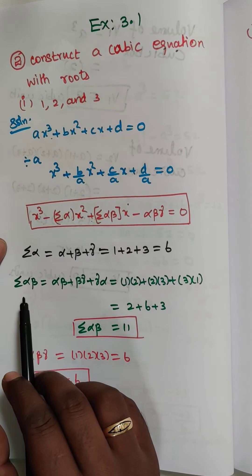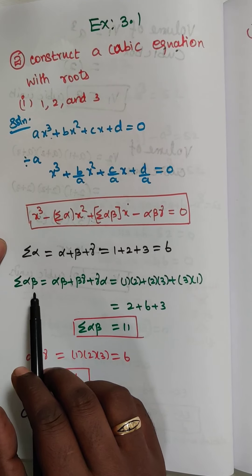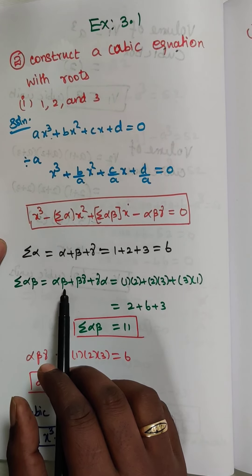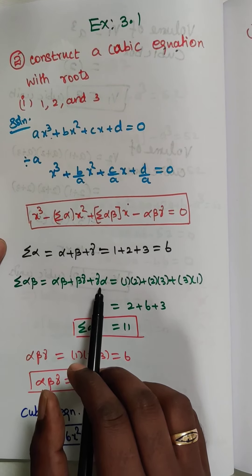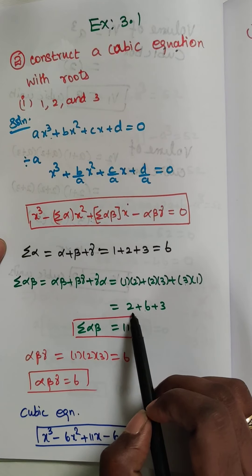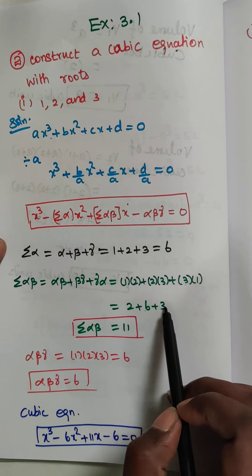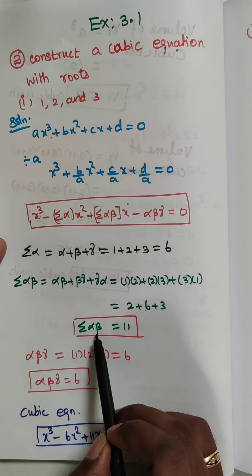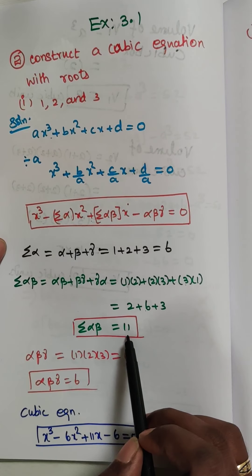Next, summation alpha beta — the formula is αβ + βγ + γα. With α = 1, β = 2, γ = 3: 1×2 = 2, 2×3 = 6, 3×1 = 3. So 2 + 6 + 3 = 11. Summation alpha beta equals 11.